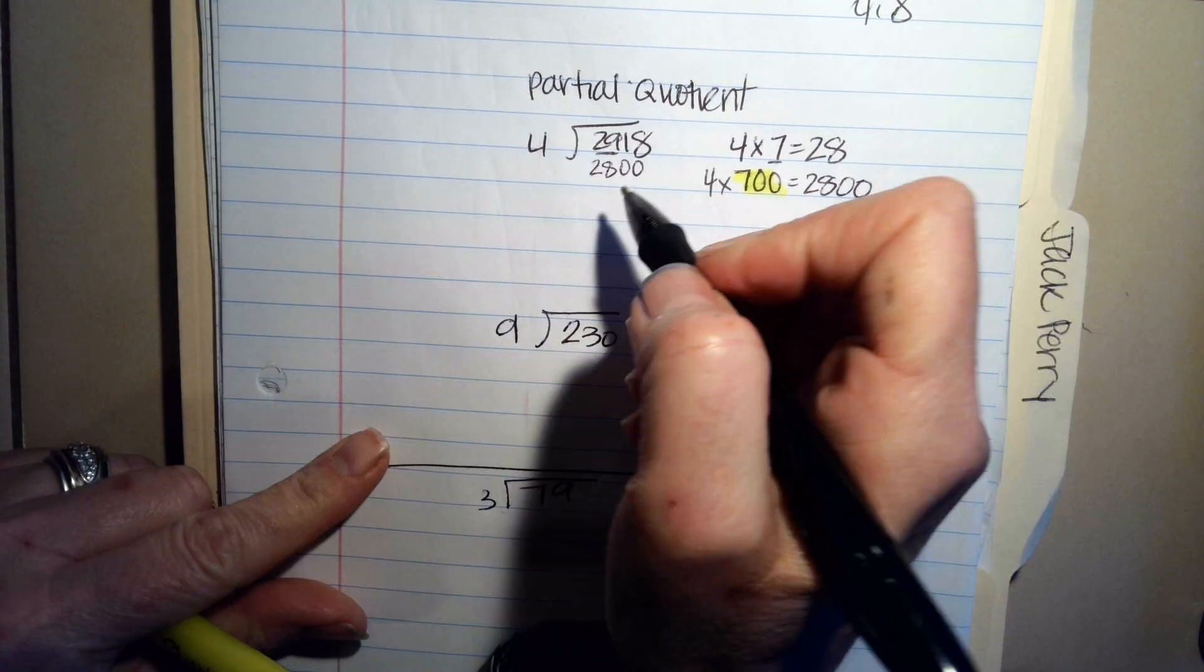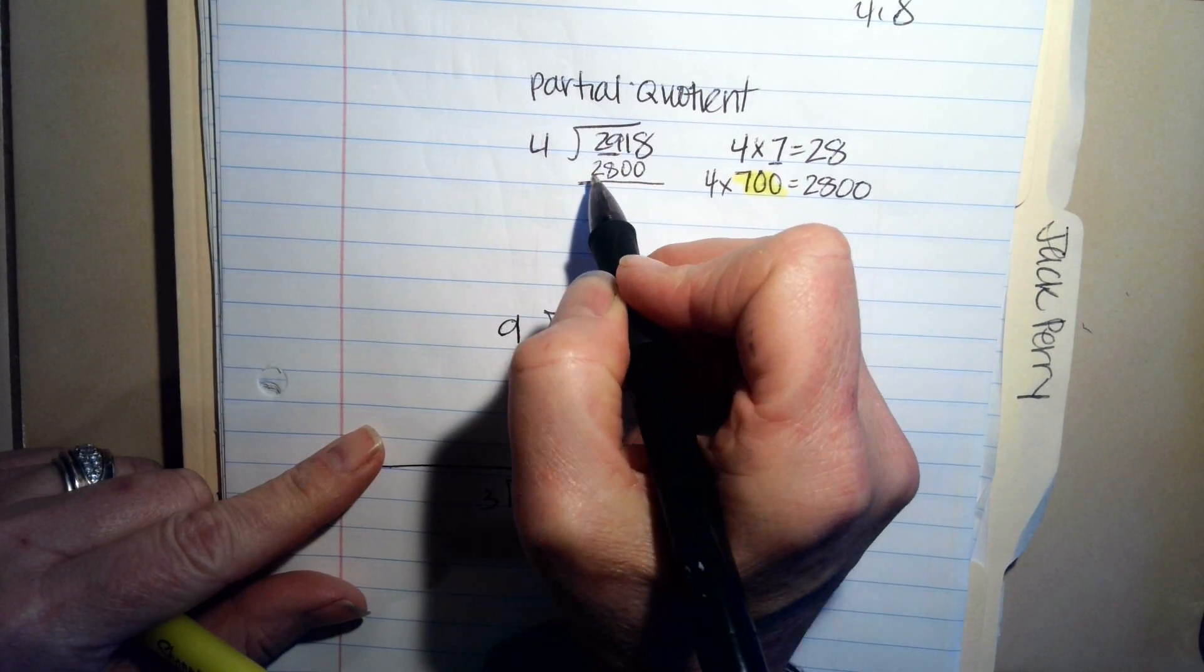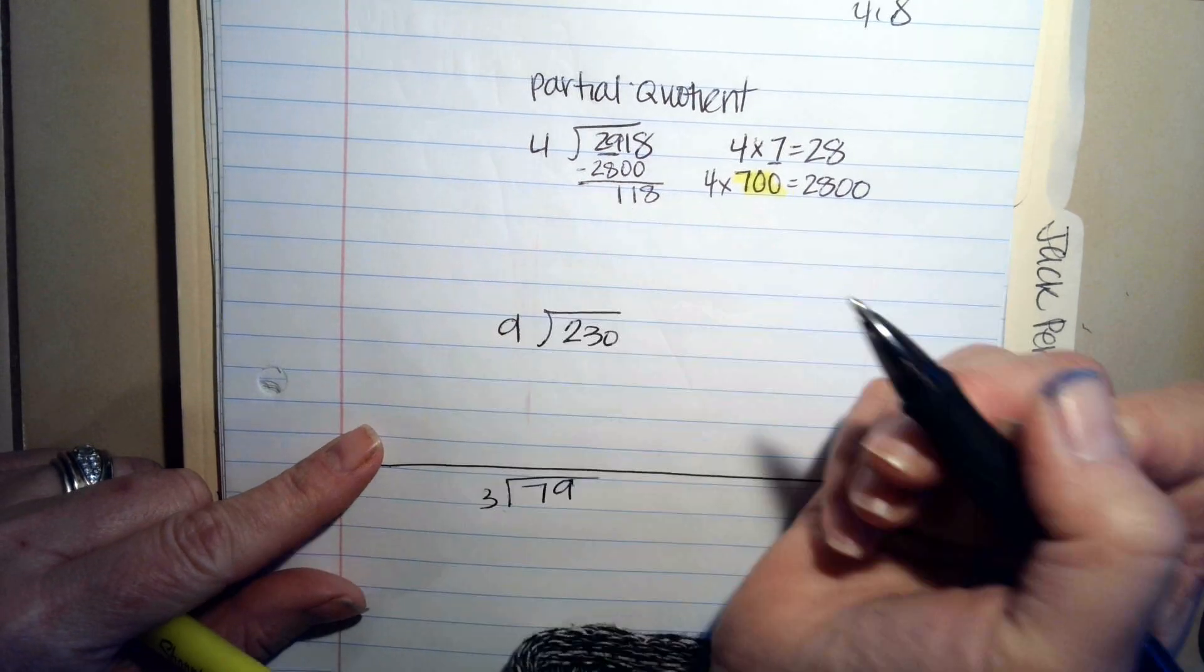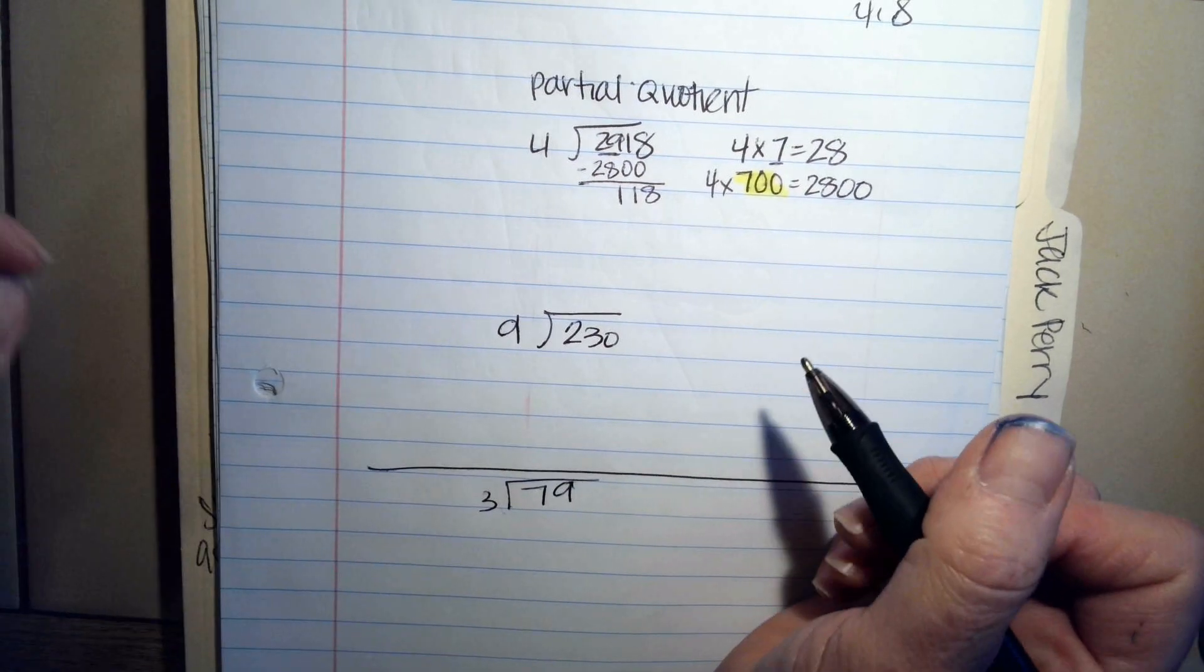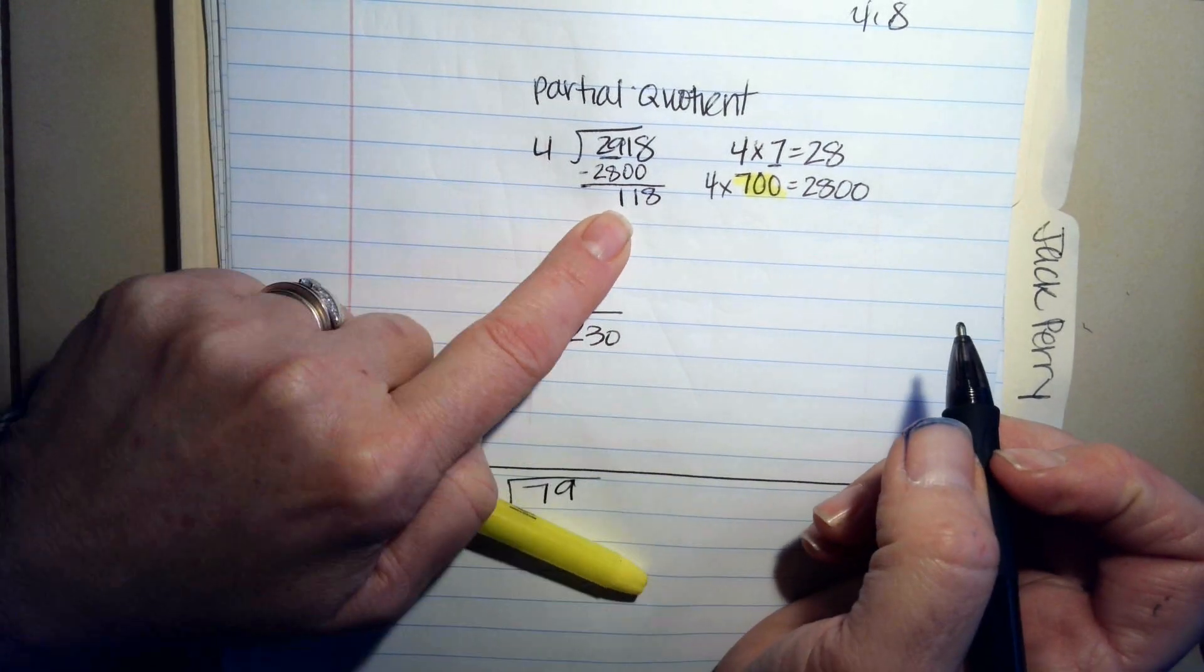Now I have to subtract this. 2,918 minus 2,800 equals 118. My next step is to try to estimate how many 4s fit into 118.